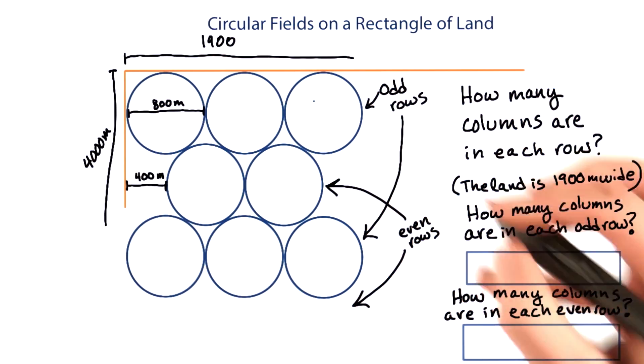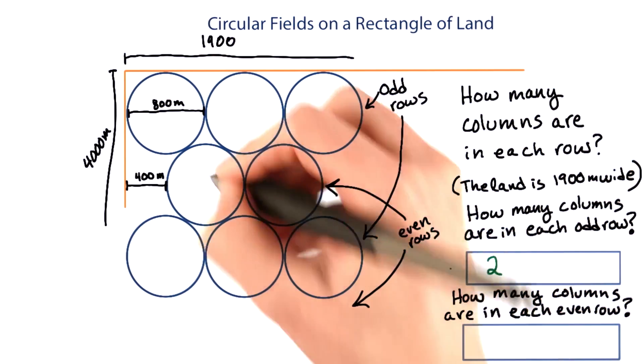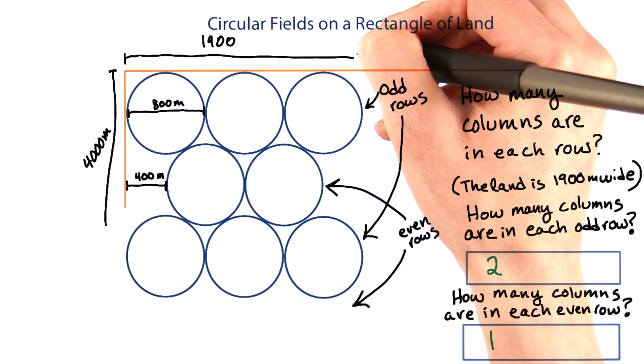The number of columns in each odd row will be 2, and in each even row will be 1. This is because the width is 1,900.